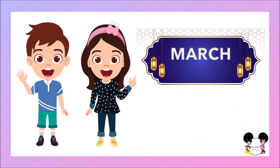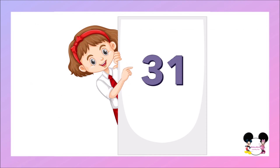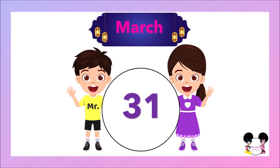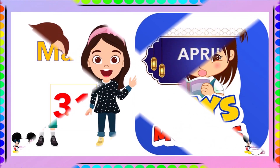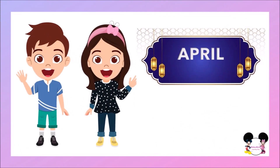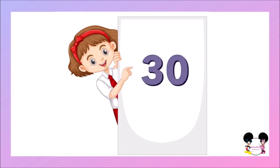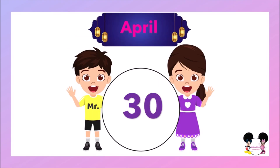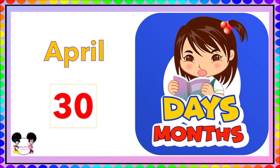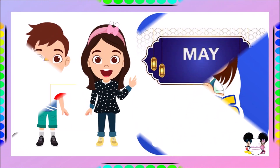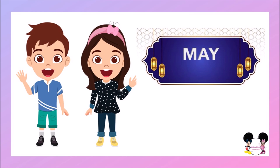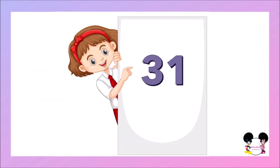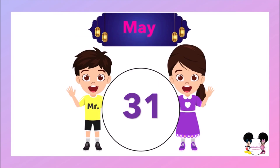March — how many days does March have? It's 31 days. March has 31 days. April — how many days does April have? It's 30 days. April has 30 days. How many days does May have? It's 31 days. May has 31 days.